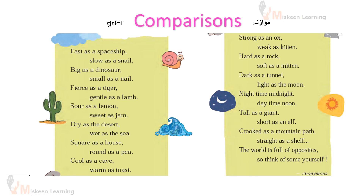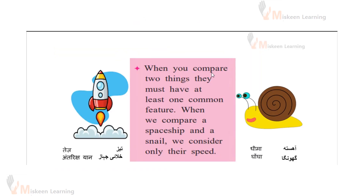In this lesson, we have learned a lot of comparisons. When you compare two things, they must have at least one common feature. So, chaliyye dekhte hai is tarik e ki aur opposites — let's look at comparisons and their opposites.